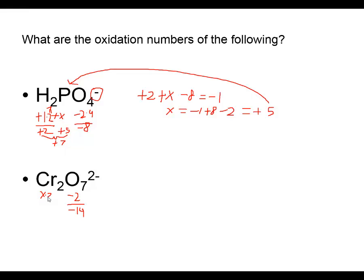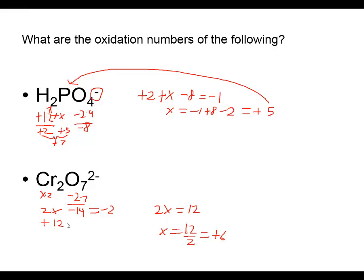Two x minus fourteen adds up to the overall charge of negative two. Adding fourteen to both sides, two x equals positive twelve. Dividing by two, x equals positive six. So each chromium has an oxidation number of plus six in dichromate. Double-checking: two times plus six gives positive twelve, and positive twelve minus fourteen equals negative two - correct.